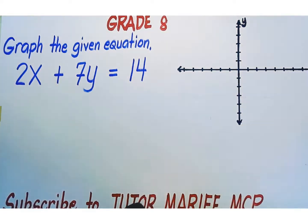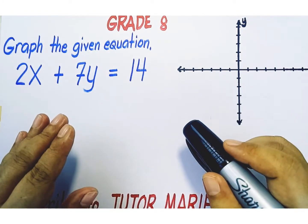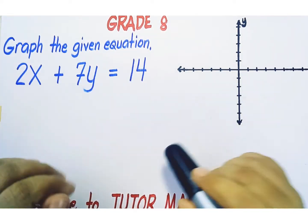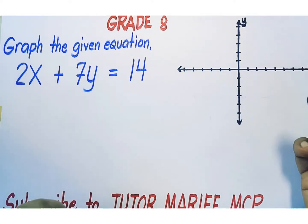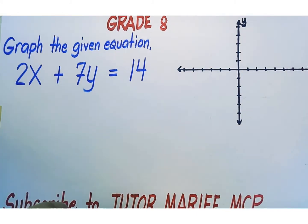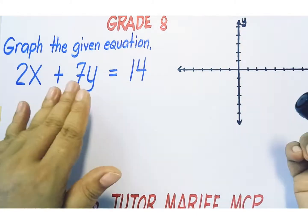or the slope-intercept form. The third way is by solving the x-intercept and the y-intercept of this equation and then plotting those points. I am going to use the third way — finding the x and y-intercepts of this equation and then plotting those two points.